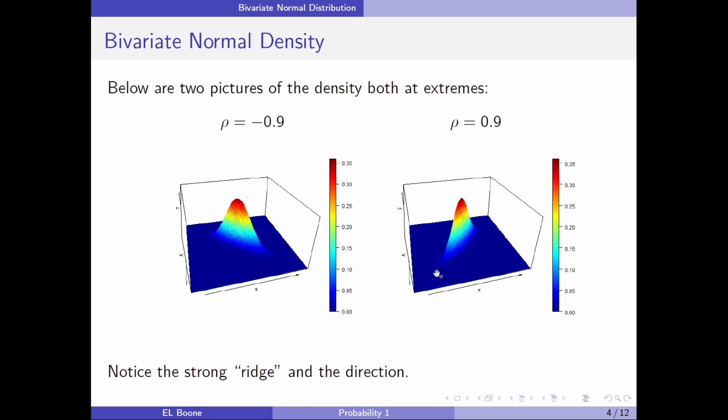It's very concentrated around the line y equals x, and this is the line y equals negative x. You can see it's quite concentrated around there.